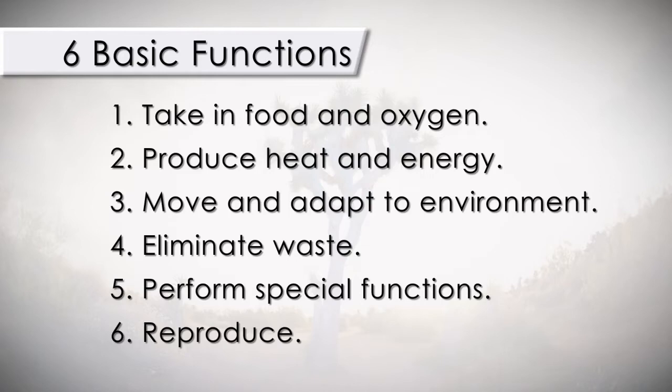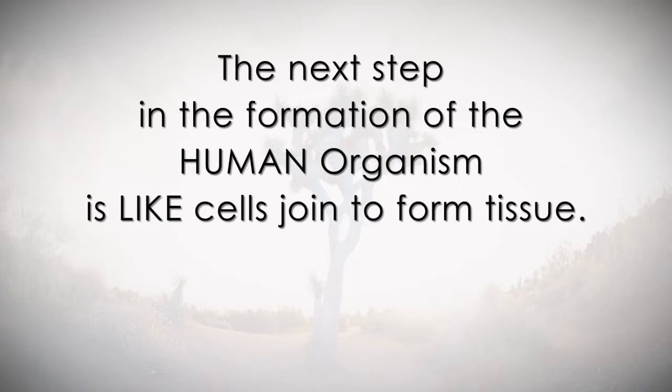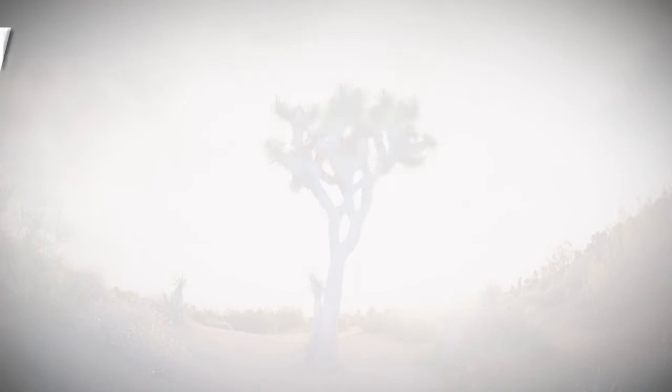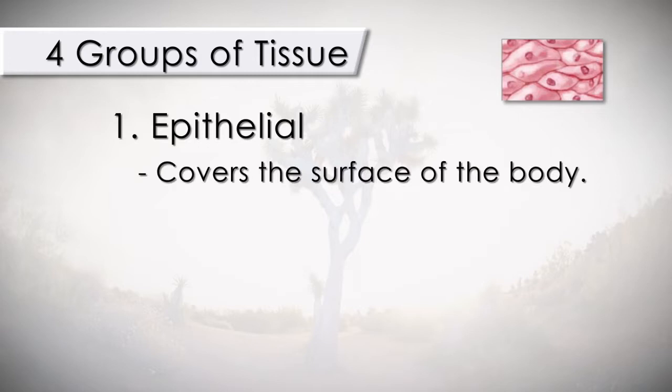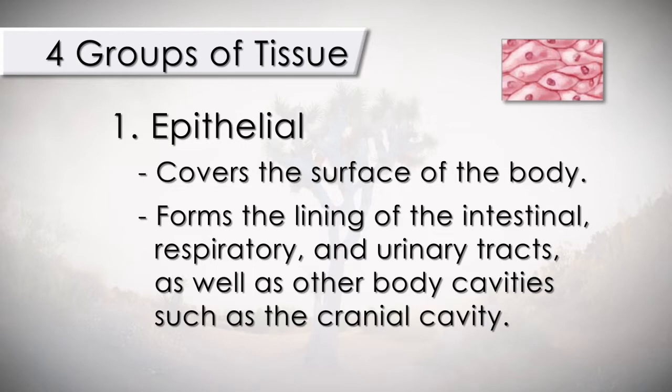The next step in the formation of the human organism is that like cells join to form tissue. There are four main groups of tissues. The epithelial covers the surface of the body; it forms the lining of the intestinal, respiratory, and urinary tracts, as well as other body cavities such as the cranial cavity. Its main function is to secrete and protect.